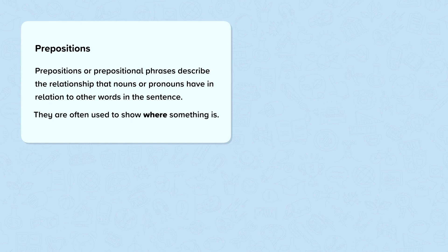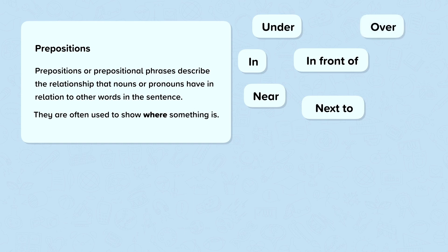They're often used to show where something is. Some examples of prepositions which show where something is include under, in, near, in front of, next to, over, on, and behind.